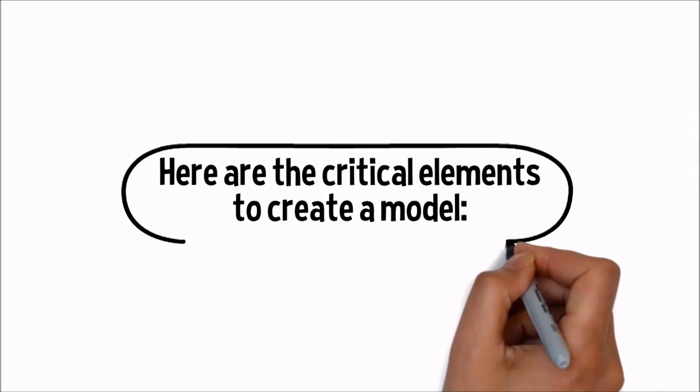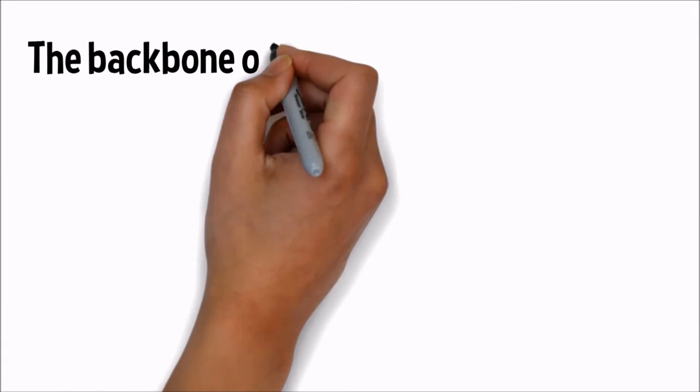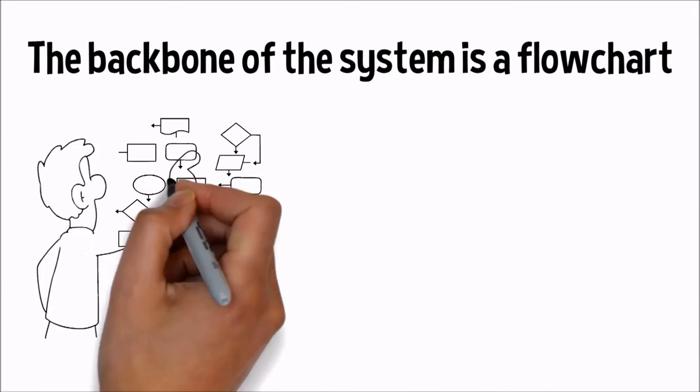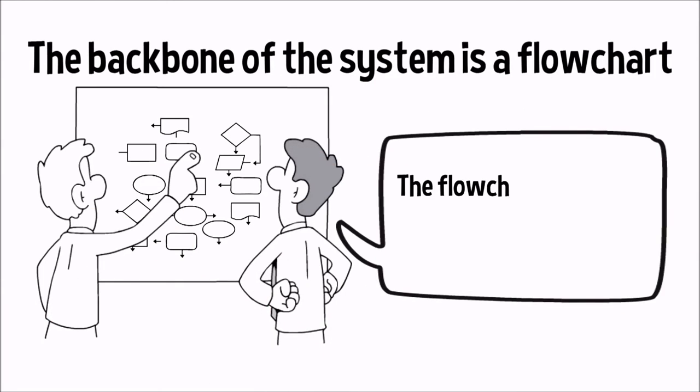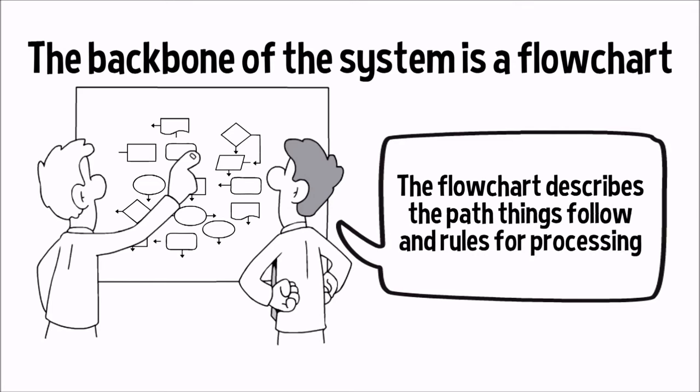Here are the critical elements to create a model. The backbone of the system is a flowchart. The flowchart describes the path things follow and rules for processing.